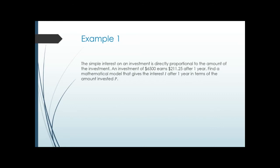Step one: translate. Interest is i; the word 'is' is where we put our equal sign — the verb is always the equal sign. 'Directly proportional' tells us we have the constant k multiplied by the input variable p. So the model from that first sentence is i equals k times p. Step two: plug in the numbers — the investment is $6,500 so p equals 6500, and the interest earned is $211.25 so i equals 211.25.